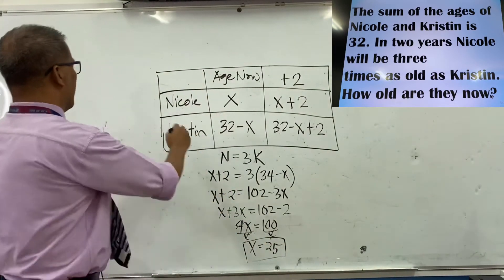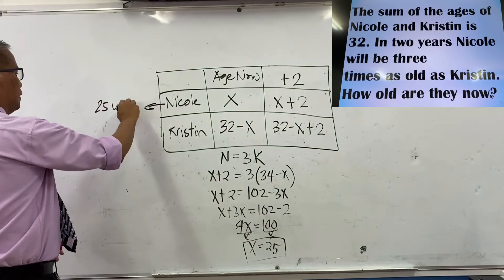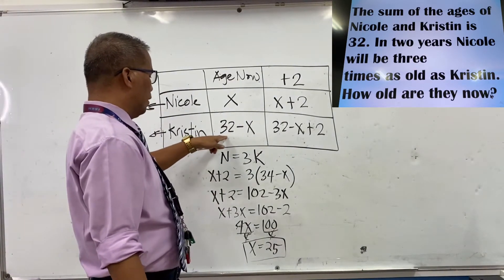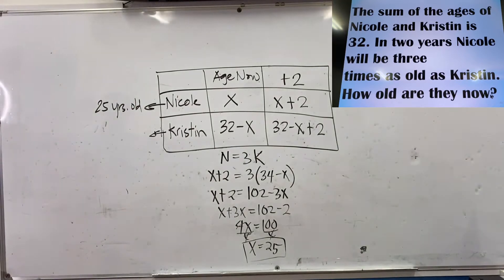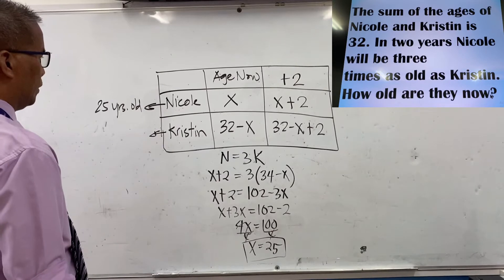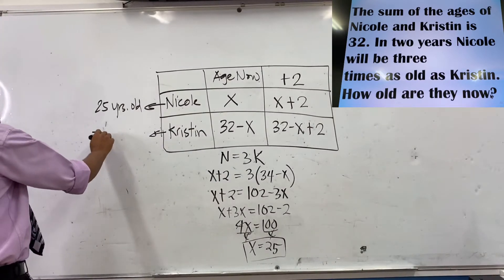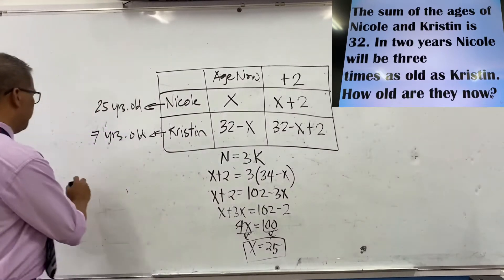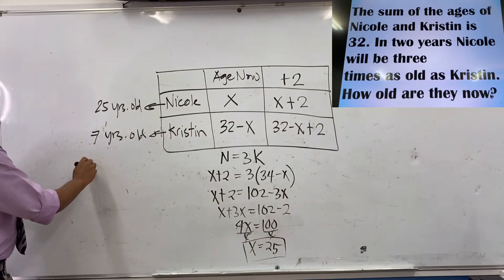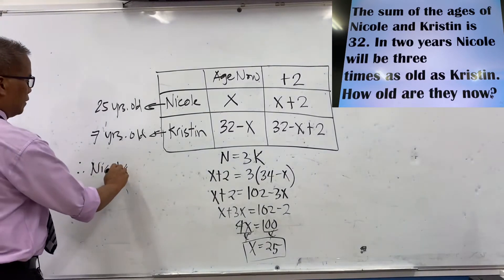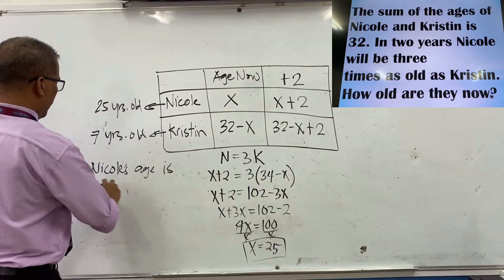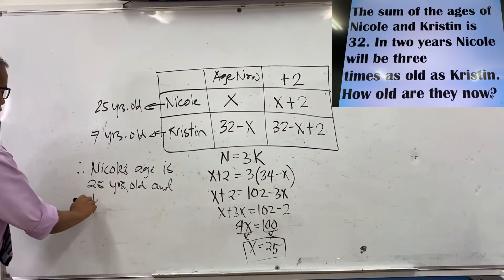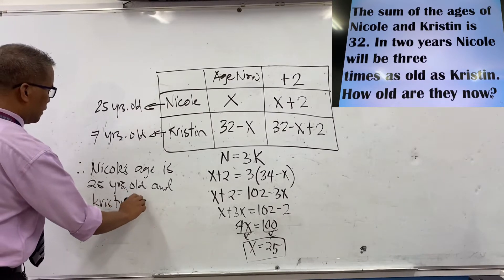So Nicole will be 25 years old. Christine's age is 32 minus 25, which equals 7 years old. Therefore, Nicole's age is 25 years old and Christine is 7 years old.